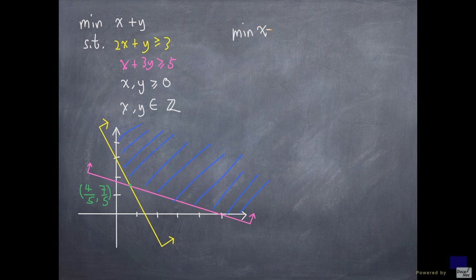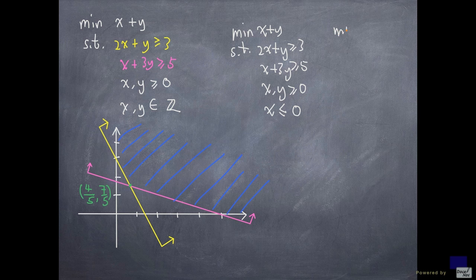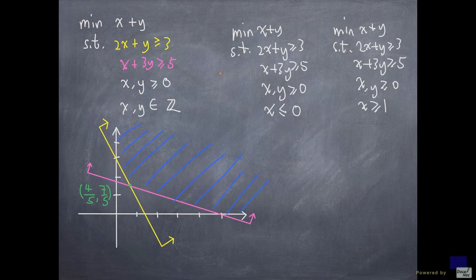So, we are going to look at the same problem divided into two cases. The first case is with x at most 0, and the second case x at least 1. Let me call these two problems P1 and P2 respectively. The reason is because there is no solution for the original problem that has x value strictly between 0 and 1. So they are either at most 0 or at least 1.